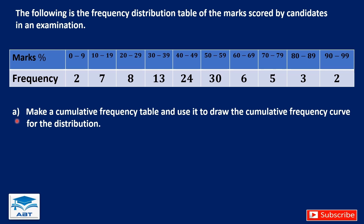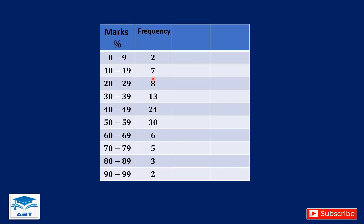For part A of the question, make a cumulative frequency table and use it to draw the cumulative frequency curve for the distribution. For the cumulative frequency table, we need two more columns. Here we have the cumulative frequency, and to generate the cumulative frequency...